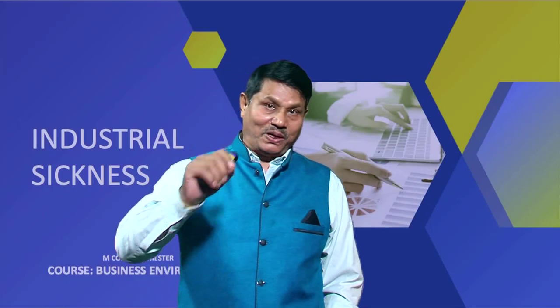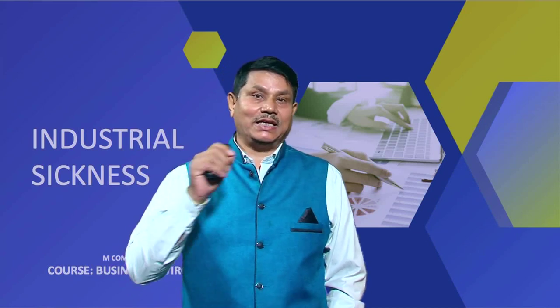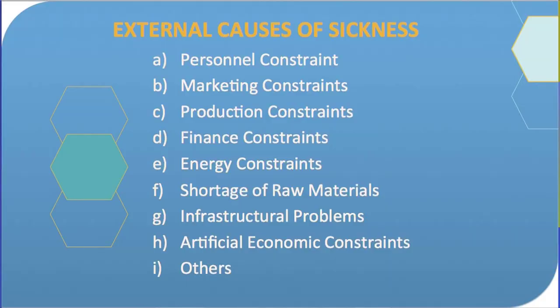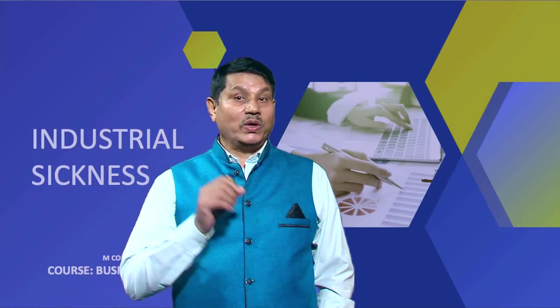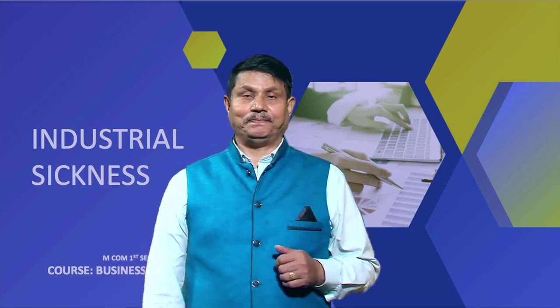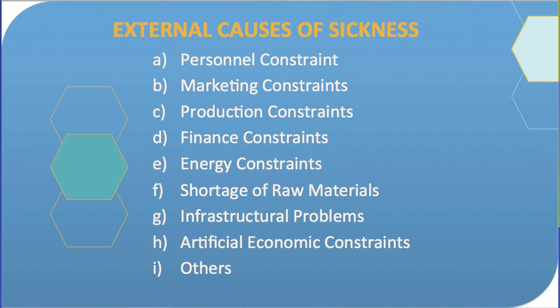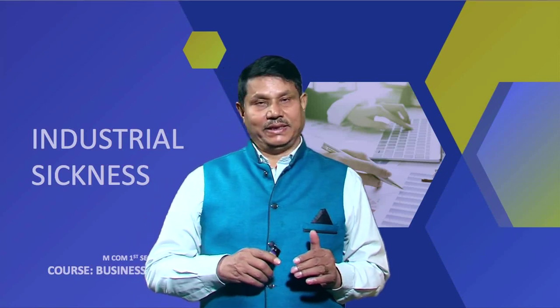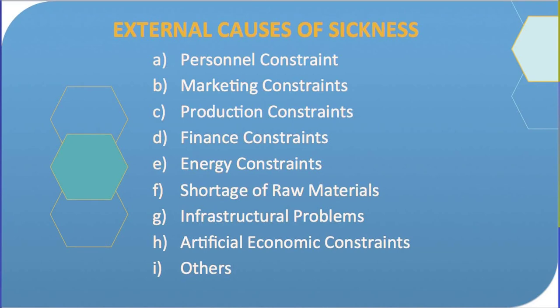Shortage of raw materials is another external cause — inability of units to achieve optimum capacity due to shortage of raw materials or poor agricultural output due to natural reasons. Infrastructural problems arising outside the industry, like transport facilities, may also influence industrial sickness. Artificial economic constraints like government control of product mix and prices, competition faced by the unit, excess capacity in the industry, and shortage of working capital may also cause industrial sickness.